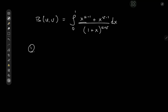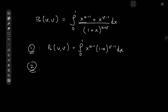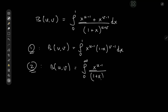The first one being the beta function with complex arguments u and v equal to the integral from 0 to 1 of x to the u minus 1 times 1 minus x to the v minus 1 dx. Another form is beta(u, v) equal to the integral from 0 to infinity of x to the u minus 1 divided by 1 plus x to the u plus v dx — I think this is the one I've invoked most.